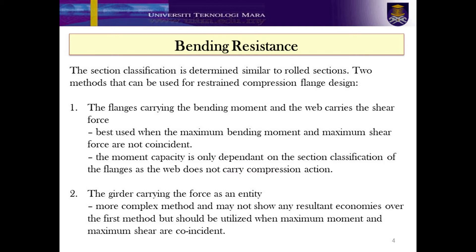In designing the plate girder, there are two methods that can be used for restraining the compression flange towards bending. The first one assumes that the flange carries the bending moment and the web carries the shear force. The second method assumes the girder carries the force as an entity. However, the first method is best used when the maximum bending moment and maximum shear force are not coincident. In this method, the moment capacity is only dependent on the section classification of the flanges, as the web does not carry compression action. Meanwhile, the second method is more complex and may not show any resultant economies over the first method, but should be utilised when maximum moment and maximum shear are coincident.